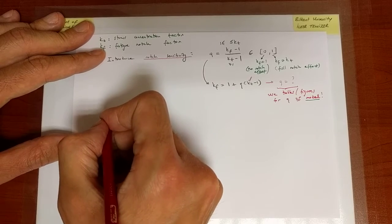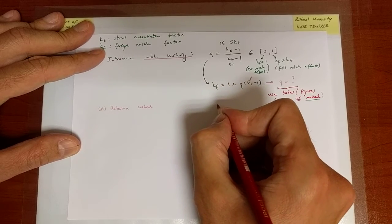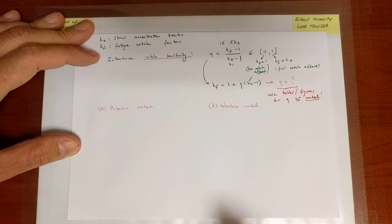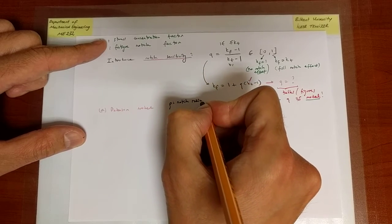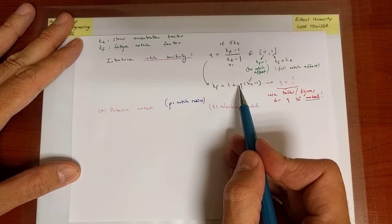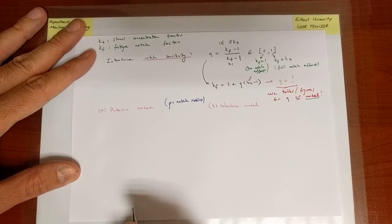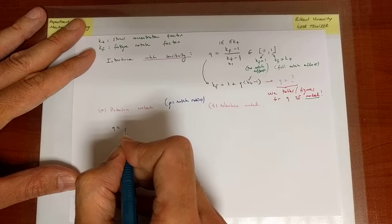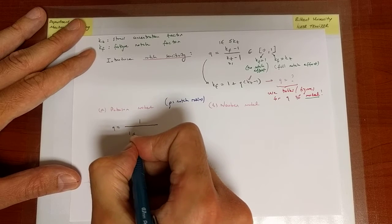The first model is called the Peterson model. And the second one is called the Neuber model. In both cases, we are going to see rho. Remember that rho is the notch radius. So what we want to do is, given KT, we want to find Q, or given a situation with the knowledge of KT, we want to predict eventually KF through the knowledge of Q. Now, therefore, the model is going to predict something about Q. Q is given as an explicit function. Actually, this fits quite well to data.